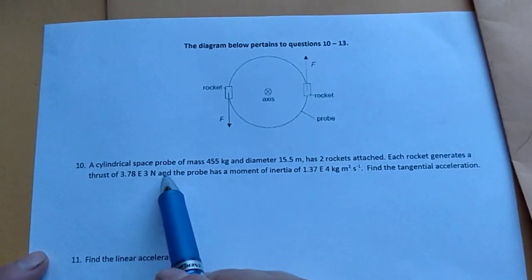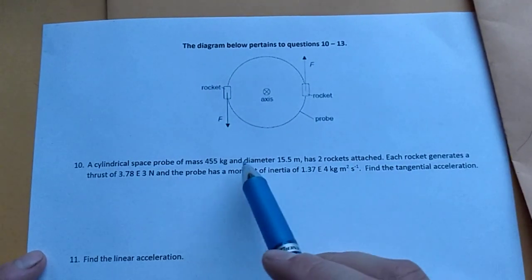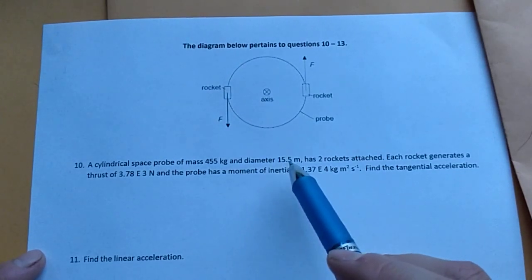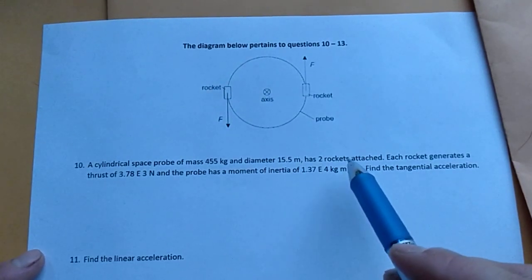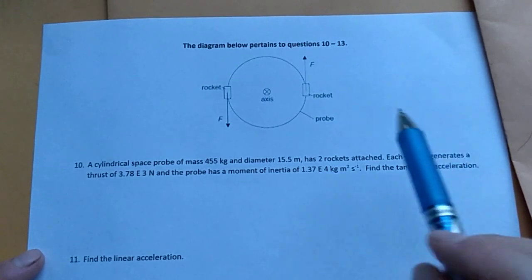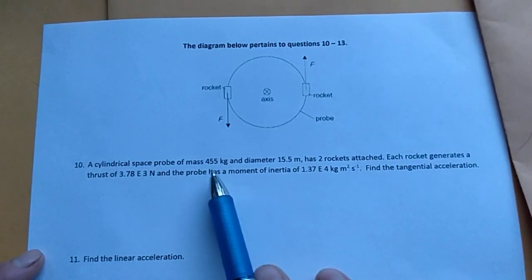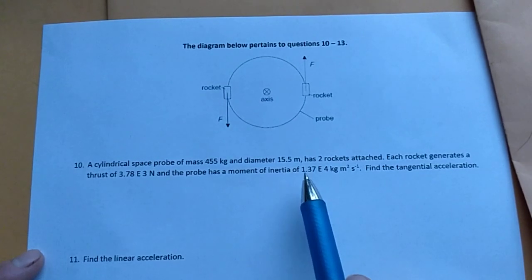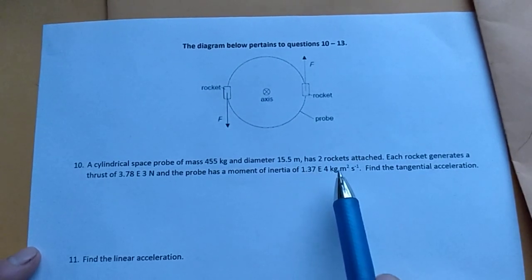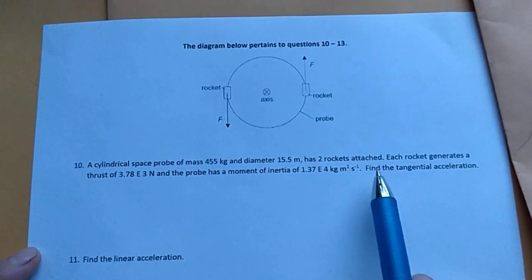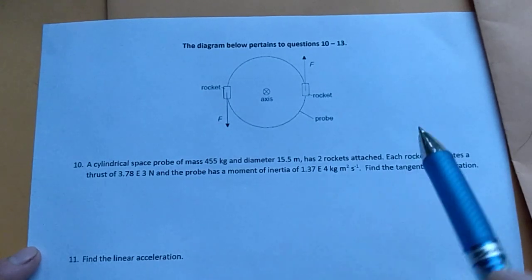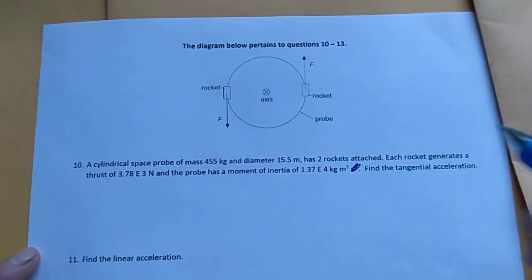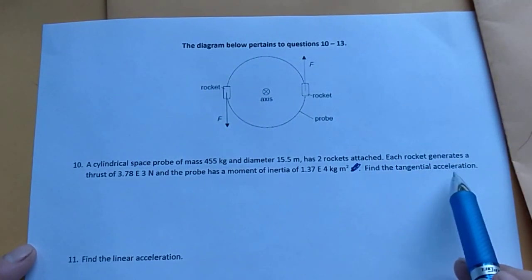So number 10, a cylindrical space probe of mass 455 kilograms and a diameter of 15.5 meters has two rockets attached. Each rocket generates a thrust of 3.78 E3 newtons and the probe has a moment of inertia of 1.37 E4 kilogram meter squared per second. This should just be kilogram meter squared. Find the tangential acceleration.